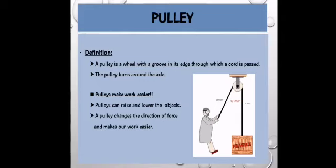So what he'll do to make his work easier, he'll pass a rope or a cord over a pulley, a wheel-like structure shown above.